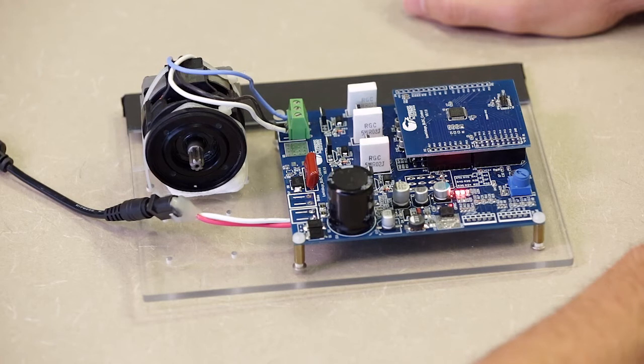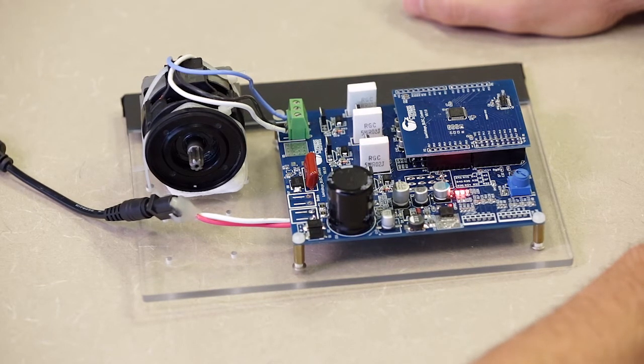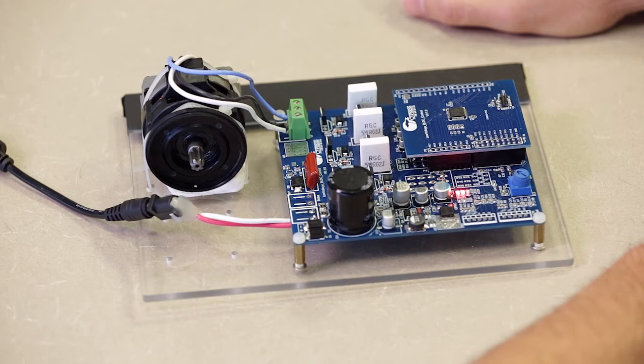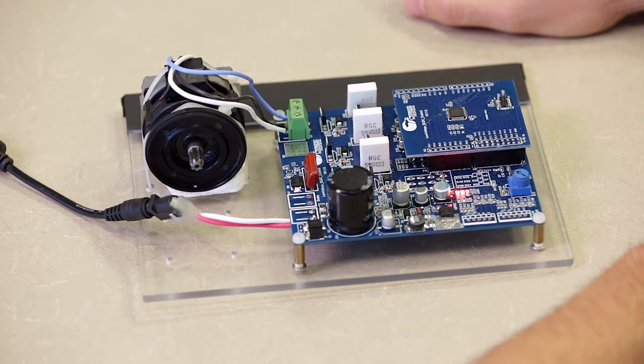We have here a PMSM motor capable of up to 25,000 RPM. On this motor control, we've implemented initial position detection as well as directly running to a closed loop motor control system and we use a high frequency injection to do the startup. We get to that closed loop motor control in less than 250 milliseconds.